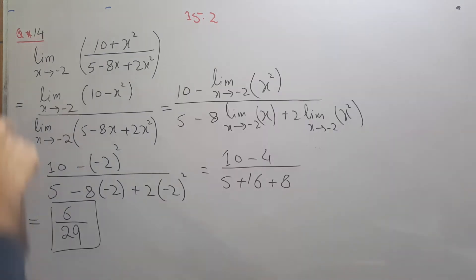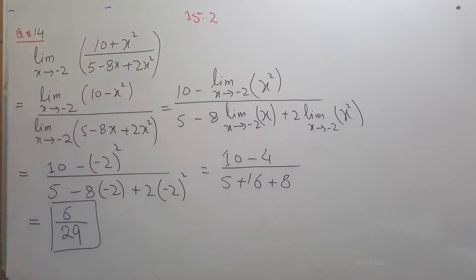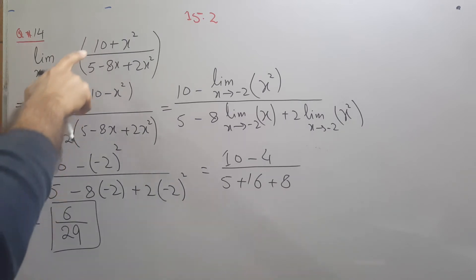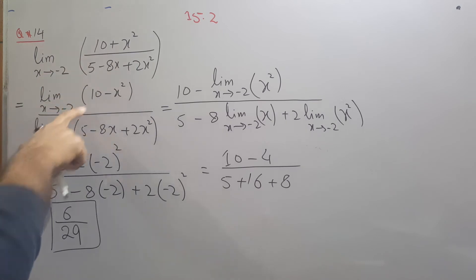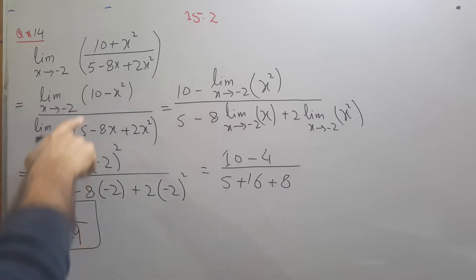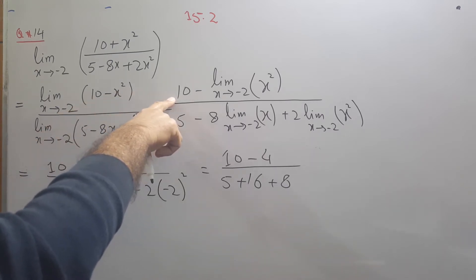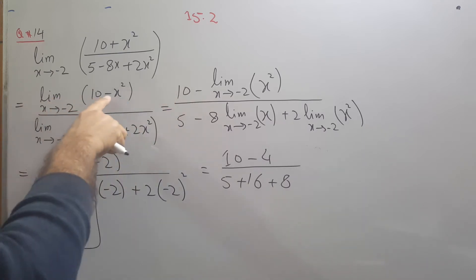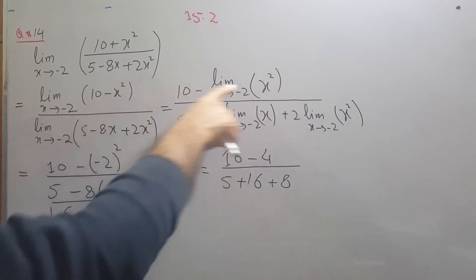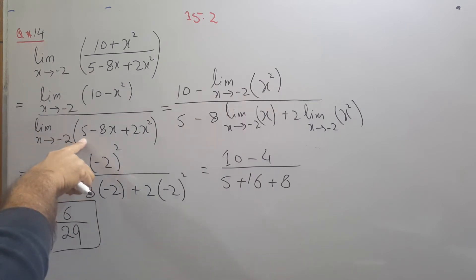Question number 14: the limit as x approaches minus 2 of a function in numerator over denominator form (p over q). We can apply the limit on the numerator and denominator separately. Since 10 is a constant its limiting value is 10, then we apply the limit on x squared separately.